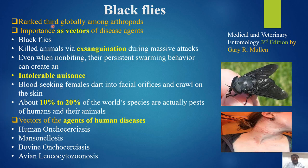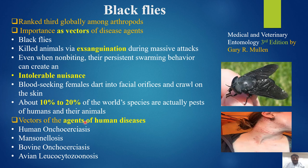Black flies are ranked third globally among arthropods in importance as vectors of disease agents. They can kill animals via exsanguination during massive attacks. Even when non-biting, their persistent swarming behavior creates intolerable conditions. About 10 to 20 percent of wild species are pests of humans and non-human animals. They are vectors of human diseases including human onchocerciasis, mansonellosis, bovine onchocerciasis, and avian leucocytozoonosis.